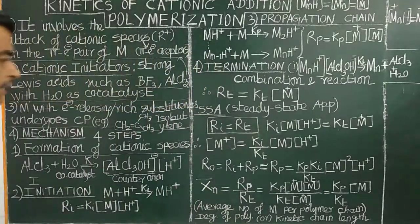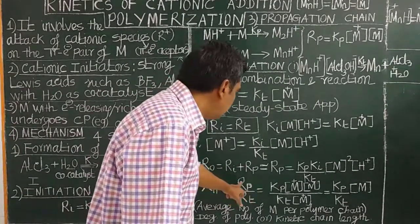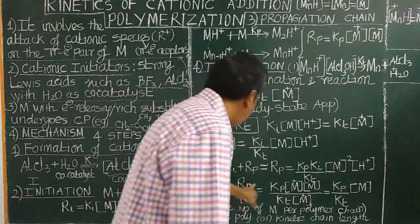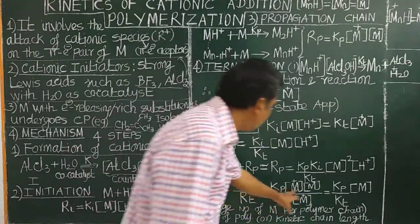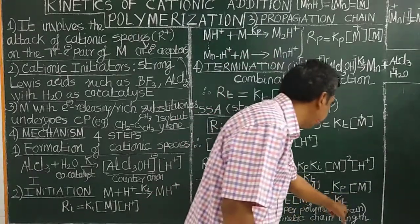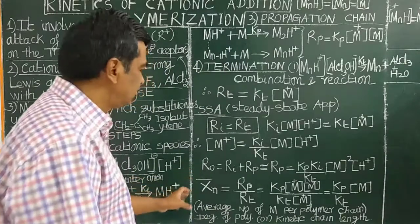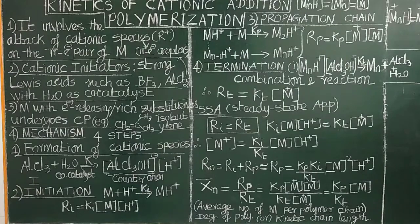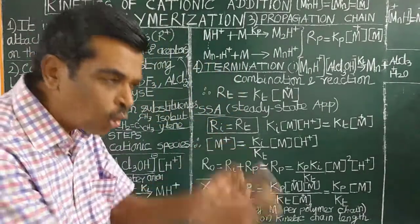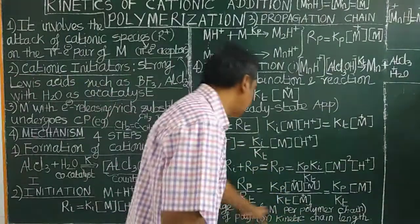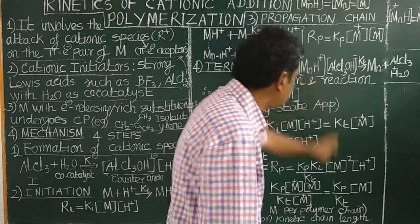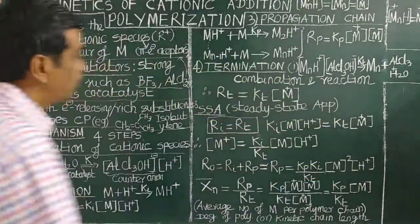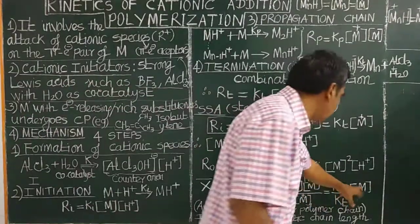The kinetic chain length, also called the degree of polymerization X̄n, is defined as the ratio between the rate of propagation and the rate of termination. The degree of polymerization is also the average number of monomer molecules per polymer chain, i.e., the chain length. If you know the propagation rate constant Kp, the termination rate constant Kt, and the initial concentration of the monomer, the degree of polymerization can be calculated.